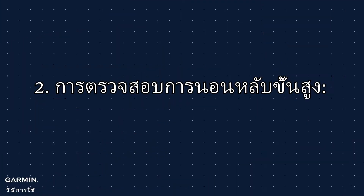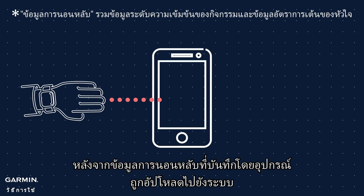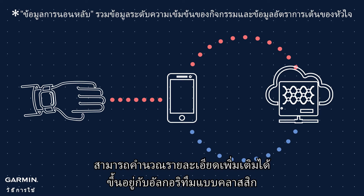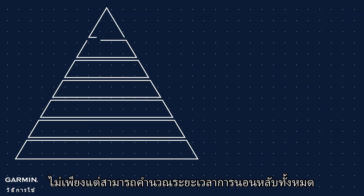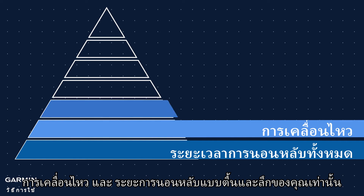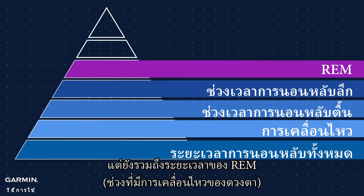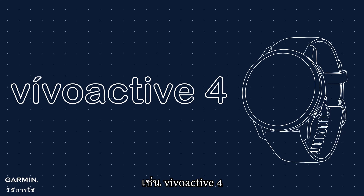2. Advanced sleep monitoring. After the sleep data recorded by the device is uploaded to the neural network, even more details can be calculated based on the classical algorithm. It not only can calculate your total sleep duration, movements, and light and deep sleep duration, but also the duration of REM (rapid eye movement) period. This algorithm is used by devices that have the advanced sleep monitoring feature, like VivoActive 4.